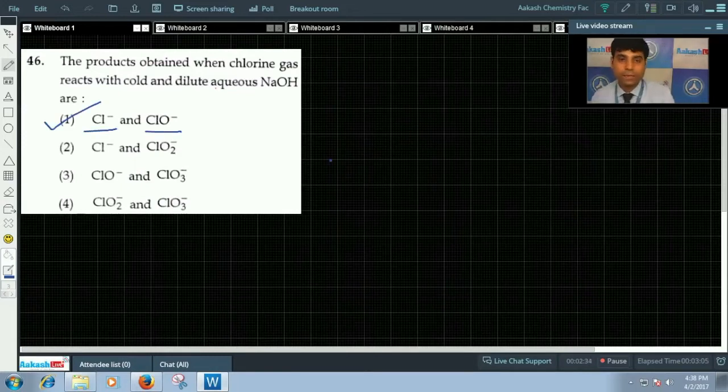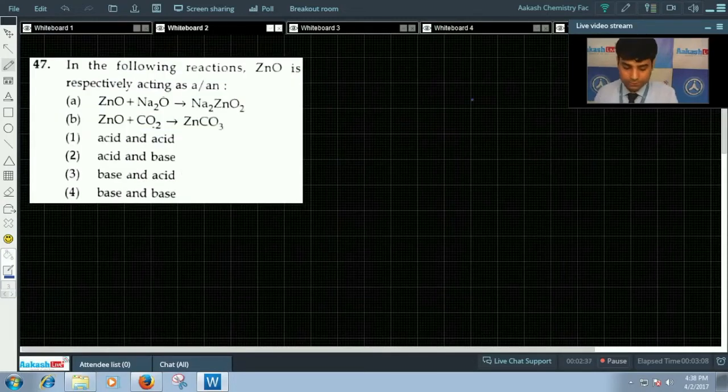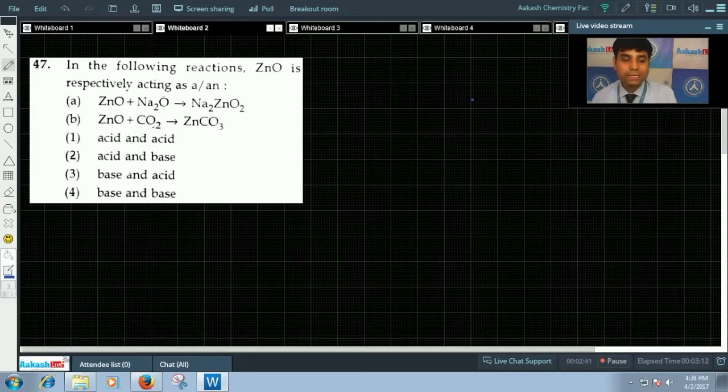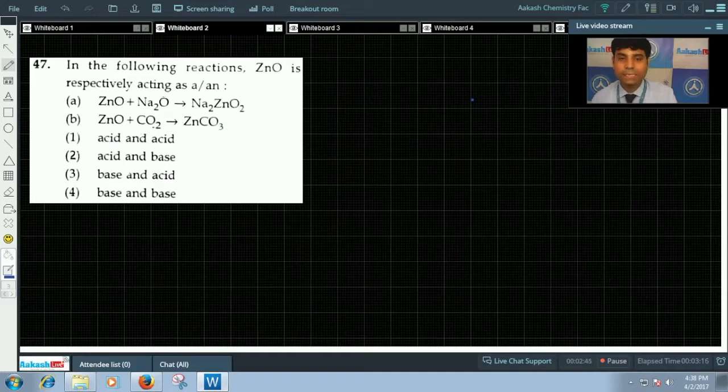Now let's move to question number 47. Question 47 says: in the following reactions ZnO is respectively acting as A or N. ZnO plus Na2O gives you Na2ZnO2.